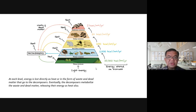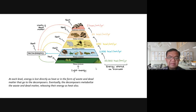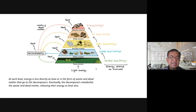The calories not retained in the body of producers and consumers are dissipated as heat. Even when alive, organisms release heat — like humans maintaining a body temperature of 36°C, and releasing more heat when feverish at 38°C. That heat is lost to the atmosphere. At each level, energy is lost directly as heat or in the form of waste and dead matter that goes to the decomposers, who also release energy as heat.